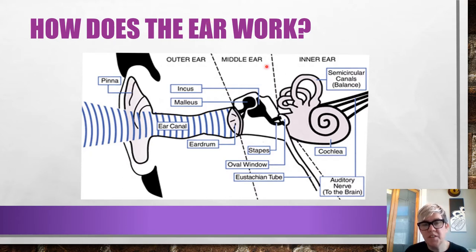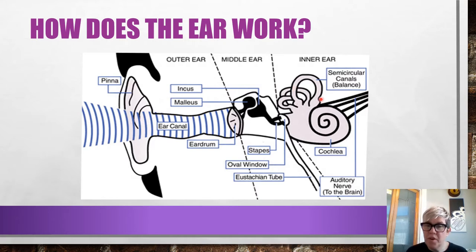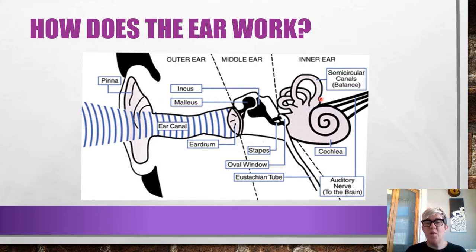There are also semicircular canals here which help with balance. When you bend over to tie your shoe and stand up, there's liquid inside the semicircular canals — moving that liquid is what makes you feel dizzy, and when it settles back where it should be, the dizziness goes away.